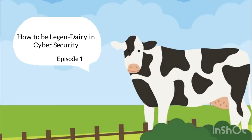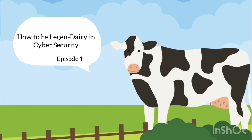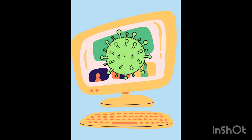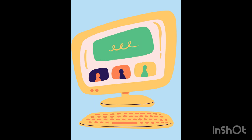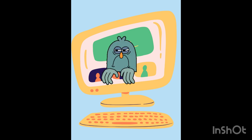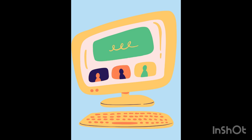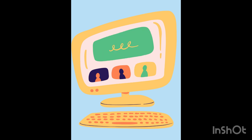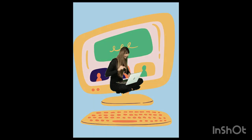Welcome to How to Be Legendary in Cybersecurity. This is episode one. Today we will be talking about what happens when malware might get downloaded onto your computer. This can happen in a multitude of ways, such as from pop-up advertisements or email links. Some of them might even look very convincingly real. Let's see how the Corny family interacts with Malware Mallory.